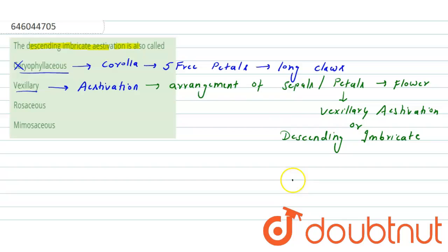So they are arranged like this, which is the larger one, and the anterior petals are like this. And therefore, the two anterior petals are united like this. They are fused. So this condition is called vexillary or descending imbricate aestivation. So this can be the correct answer.